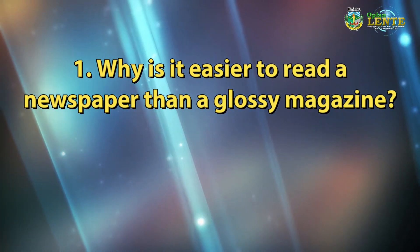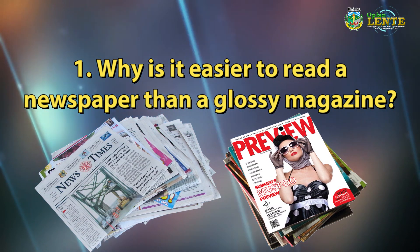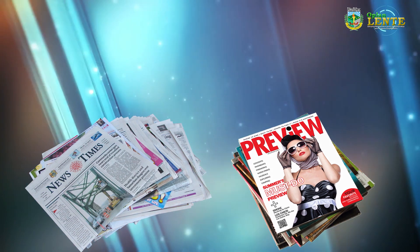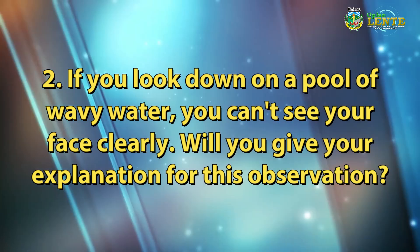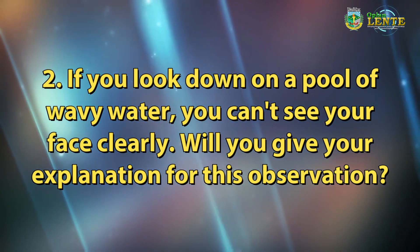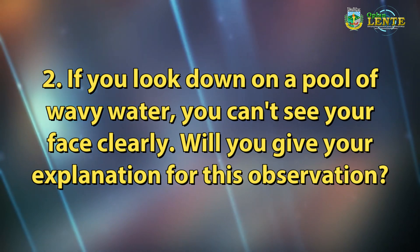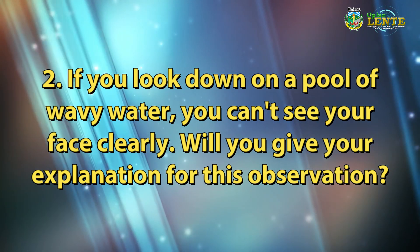Are you now ready for a short quiz? Let's see what you've learned for today's session. Why is it easier to read a newspaper than a glossy magazine? Because the incident rays on newspaper reflect in only one direction, or reflect directly to our eyes. If you look down on a pool of wavy water, you cannot see your face clearly. Can you explain this observation? The water is wavy, that's why your image is distorted.